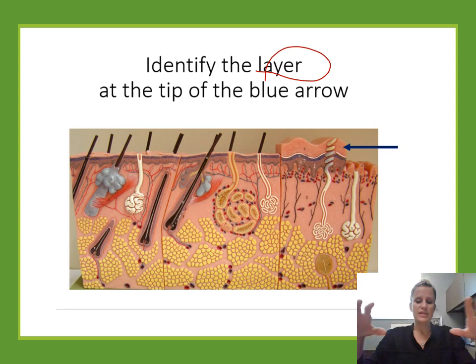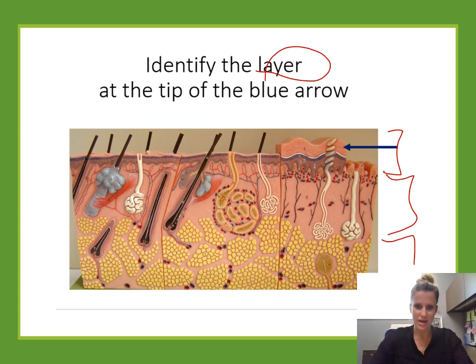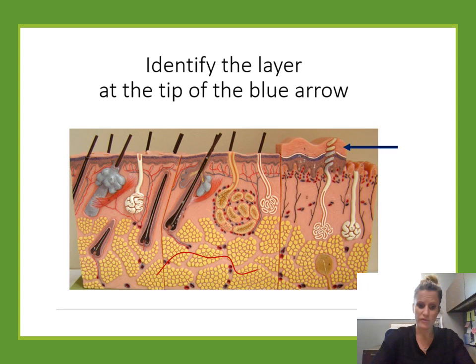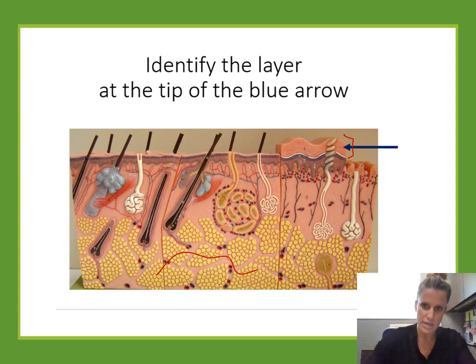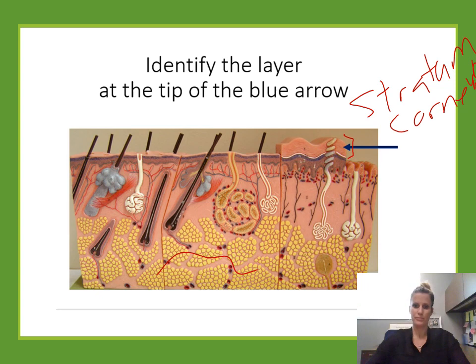Identify the layer at the tip of the blue arrow. In the integumentary system, the very top region is the epidermis, then underneath is the dermis, and at the bottom with all the yellow fat is the hypodermis. The epidermis has four or five layers depending on skin type. This side shows thick skin because of the thick outer layer. Regardless of thick or thin skin, the outermost layer of dead skin cells on the very outside is the stratum corneum.